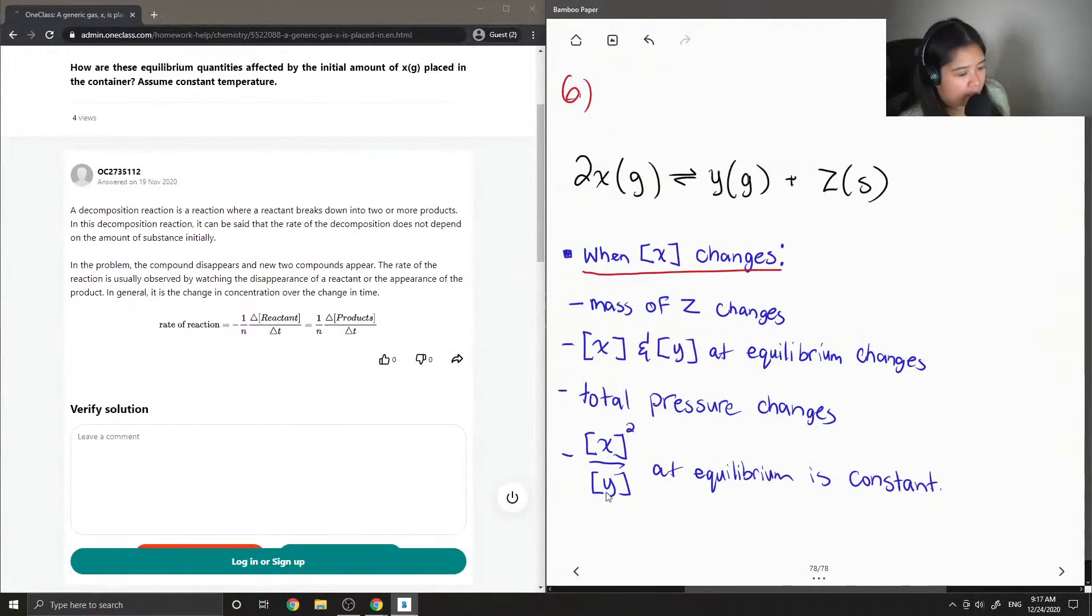So this last point can be described as the rate of decomposition. And the reason why the X is squared is because in the balanced chemical equation, there is a coefficient of two in front of the X. So that's why it's important to balance your reaction equations, because this in turn will affect the rate of the reaction.